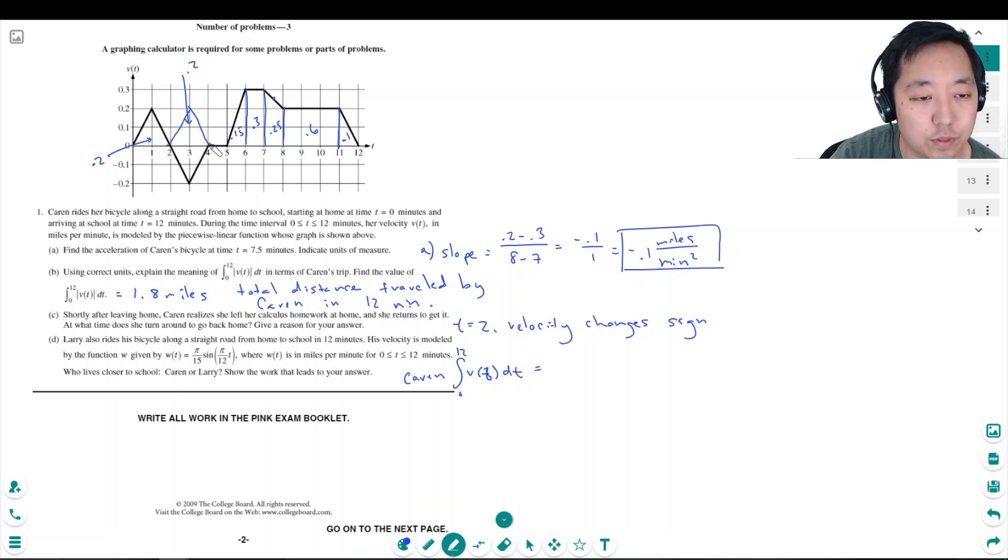So here she kind of started from the beginning. Another way to think of it is this area cancels that area. And so then the remaining area is just 1.4 miles.